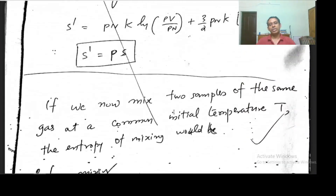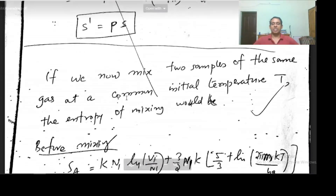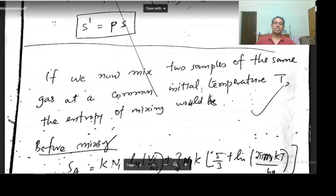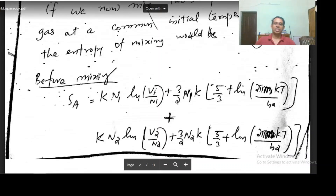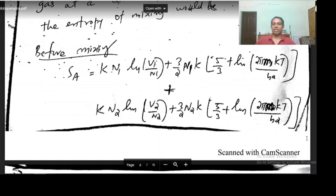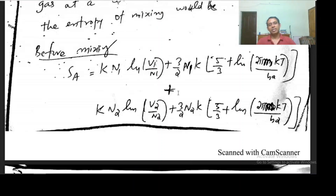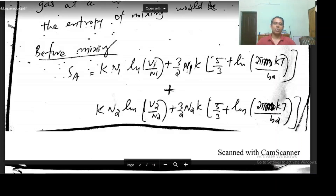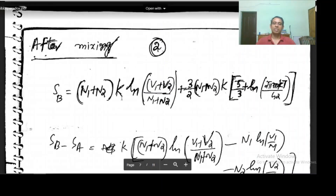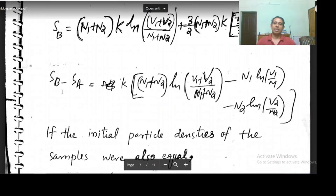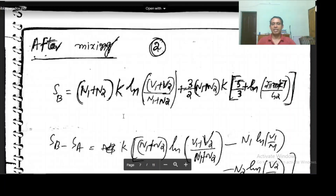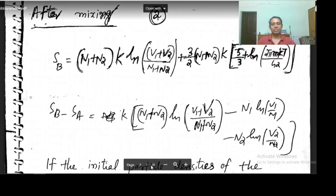If we now mix two samples of the same gas with the same initial particle densities at a common initial temperature T, before mixing this will be the expression for entropy — for the first gas and the second gas. Both gases are the same, but their volumes and numbers of particles are different, while particle densities are the same. This will be the total entropy before mixing, and after mixing this will be the entropy.